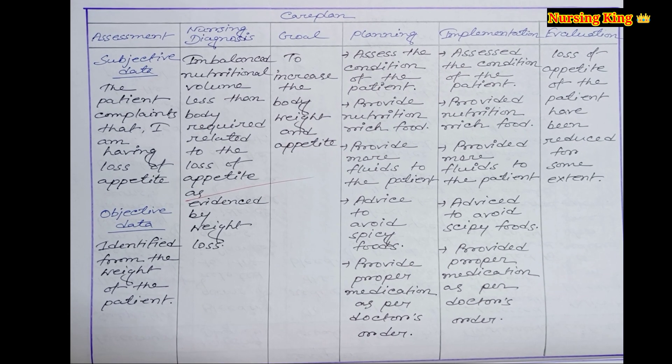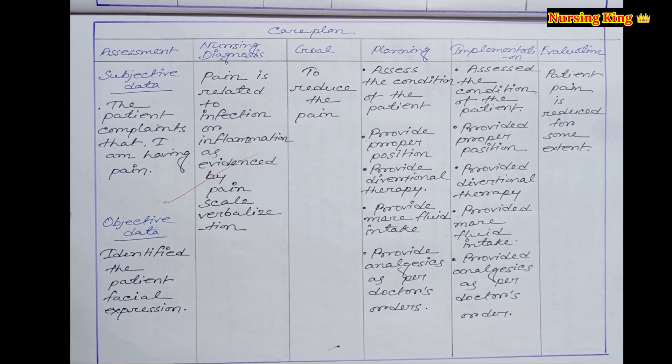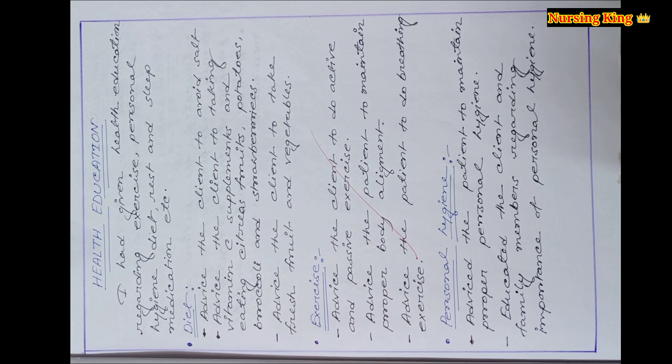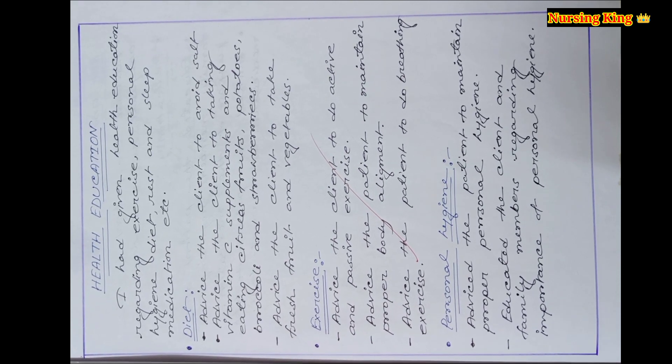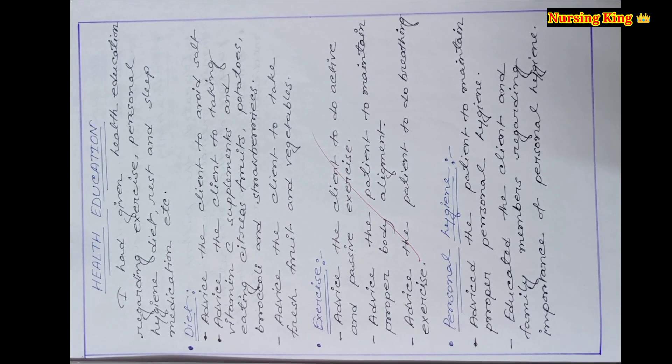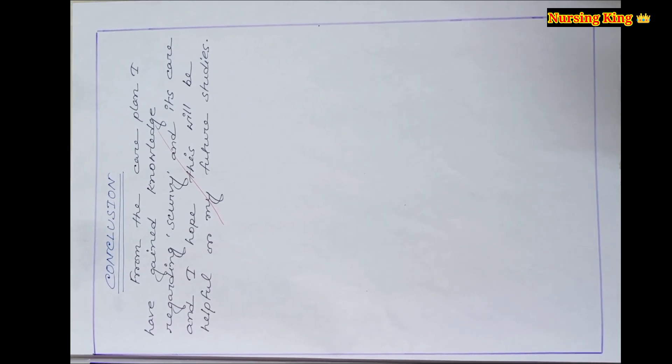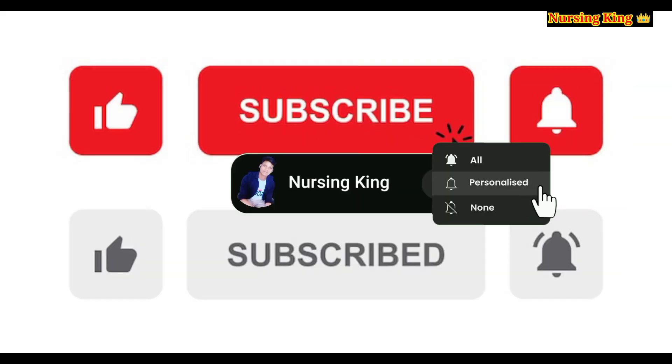In the nursing care plan, five or six components are present: diagnosis, goal, planning, implementation, and evaluation. Minimum four you have to write. After that, health education you have to write - diet, exercise. Last is the conclusion. After that, bibliography also you can mention. Please like and subscribe to my channel.